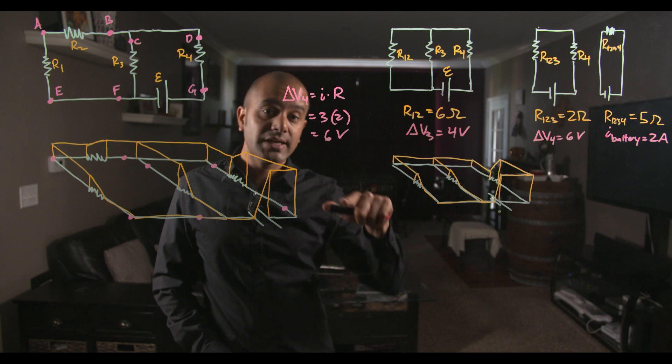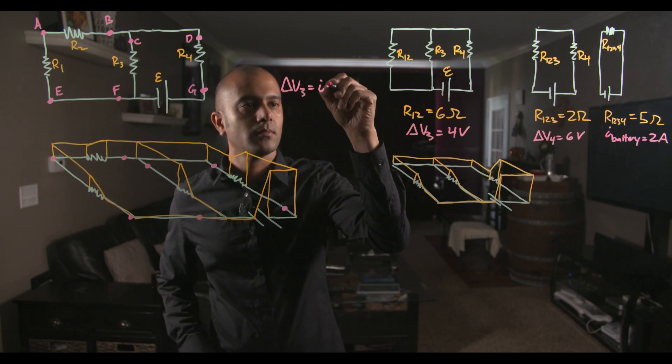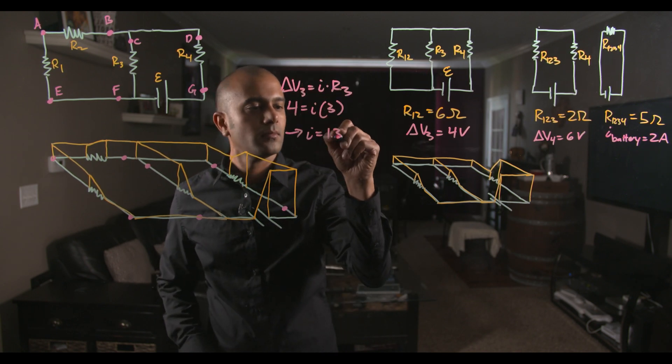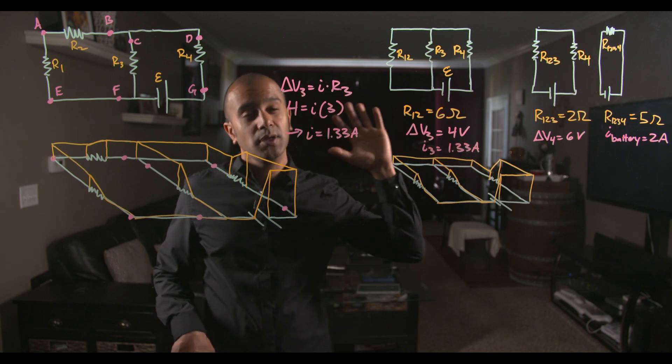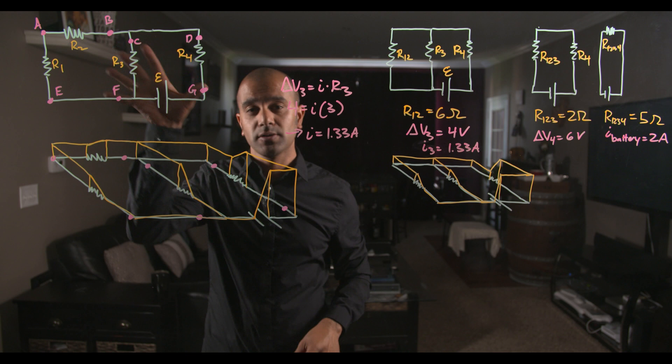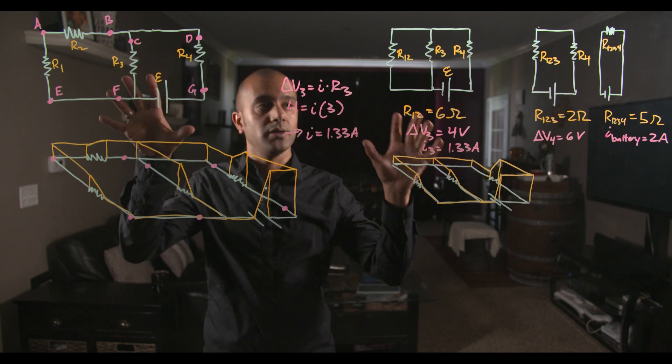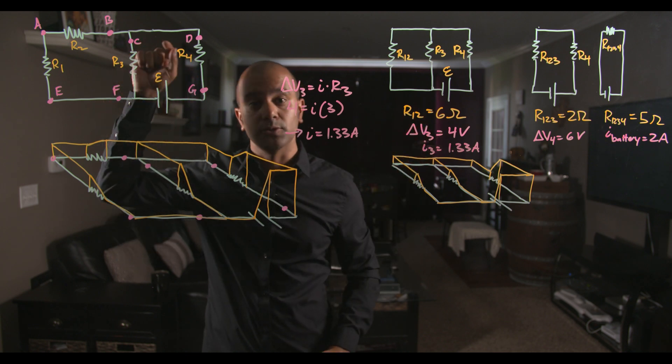Now once you have that, you can once again use Ohm's law to figure out what the current is through that resistor. We get that the current through the resistor 3 is 1.33 amps. So we're just going to move back one more step to the original diagram and use that quantity to figure out what the current is through point B.